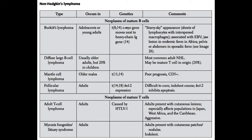Follicular lymphoma is another type that is difficult to cure with chemotherapy, because it progresses very slowly with an indolent course. Slower-growing tumors that replicate less quickly tend to be less responsive to chemotherapy. The important translocation is between chromosomes 14 and 18, which causes overexpression of the BCL2 gene. BCL2 normally inhibits apoptosis, so overexpression means too much inhibition of apoptosis — cells don't die when they should, leading to uncontrolled proliferation and tumor formation.